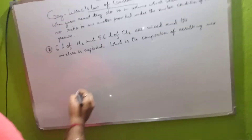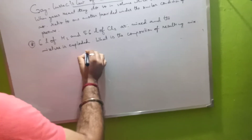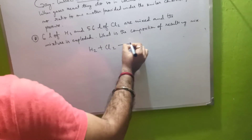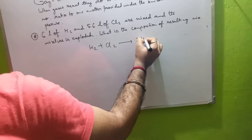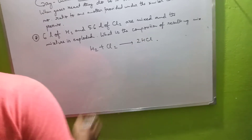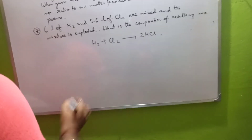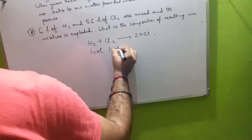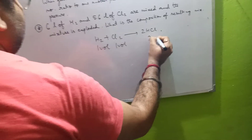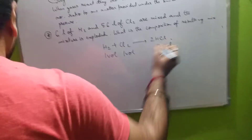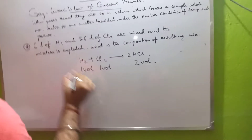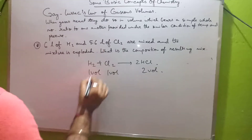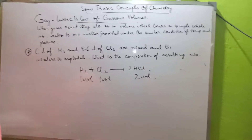Let us write down: H₂ + Cl₂ → 2HCl. One volume of H₂ and one volume of Cl₂ gives two volumes of HCl. Now let us write down the volumes — how much is the volume of H₂ and how much is the volume of Cl₂.